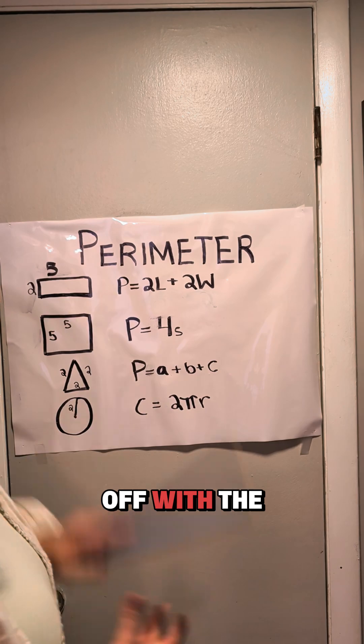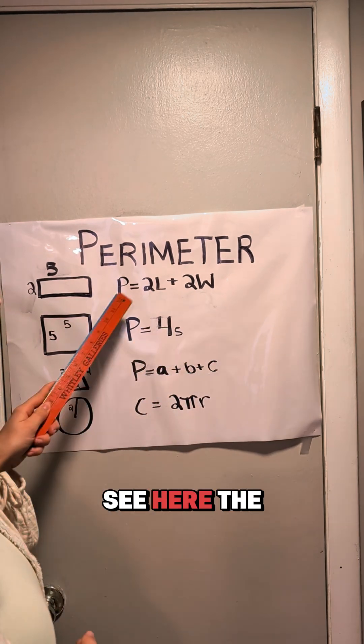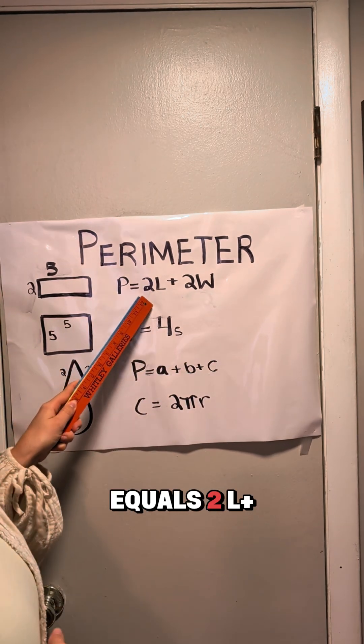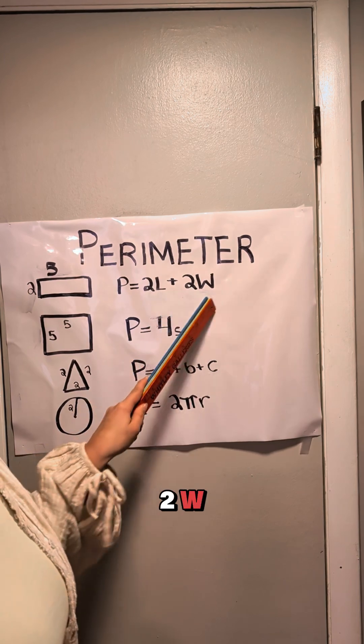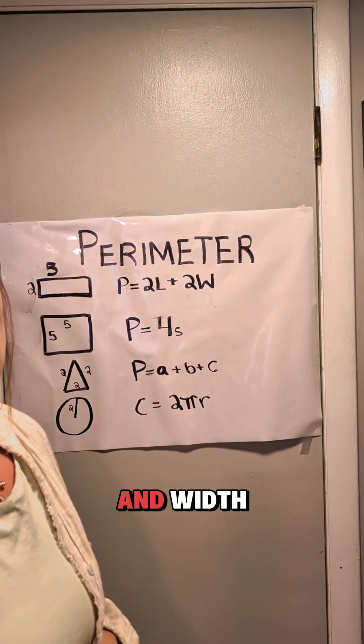First things first, we're going to start off with the rectangle. As you can see here, the formula is P equals 2L plus 2W, which is length and width.